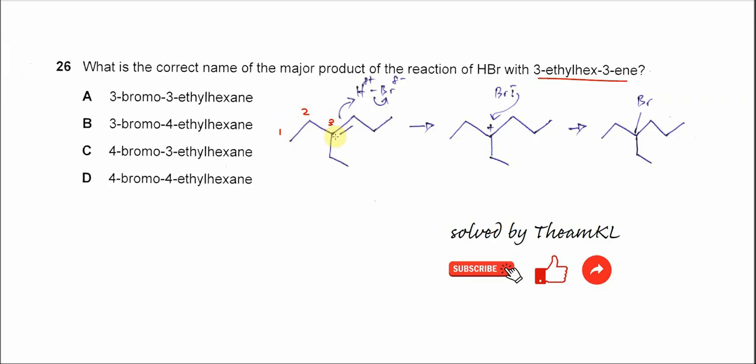On the third carbon there is a C=C double bond here, and the substituent or the branch is 3-ethyl, means on the third carbon there will be one ethyl group here: CH2-CH3.